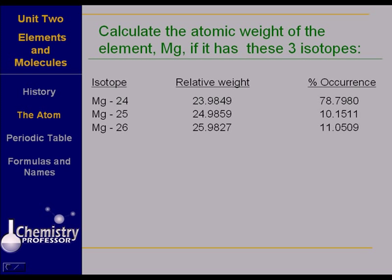So magnesium-24 has a relative weight of 23.9849. Now notice the percent occurrence. These are talking about the naturally occurring isotopes, not any man-made ones. When you add these percent occurrences up, they should add up to equal 100. We want to find the atomic weight that should be listed on the periodic table if magnesium has these three isotopes.